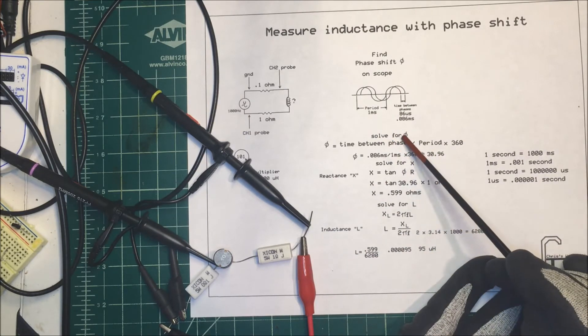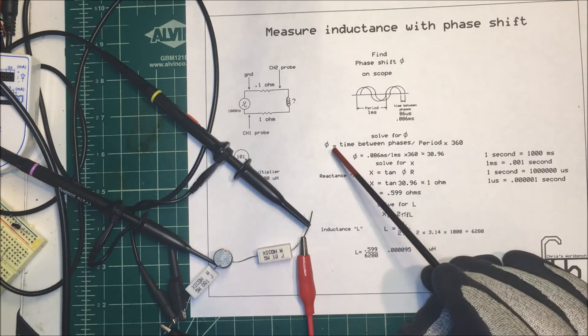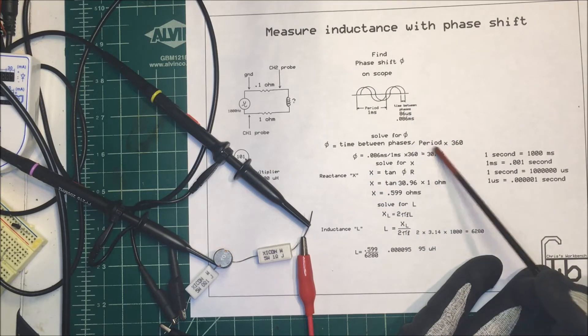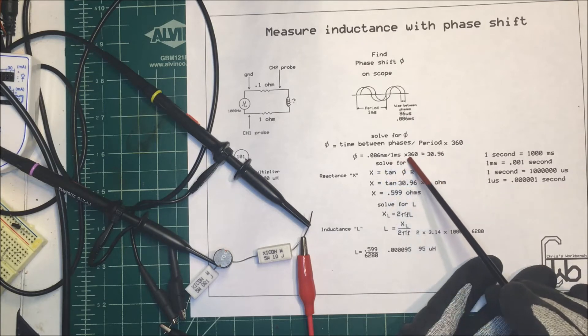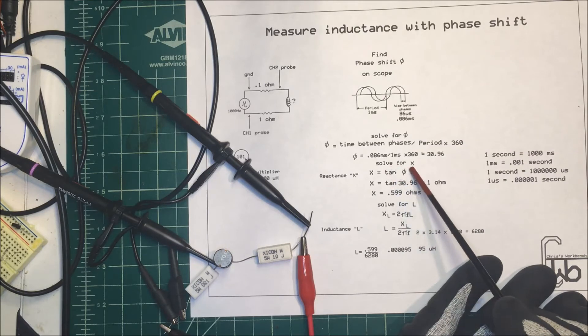Now we want to solve for this phase shift angle. That's the time between the phases divided by the period times 360 degrees. If we multiply that out, it comes out to 30.996 degrees. Now we want to solve for X, our reactance.